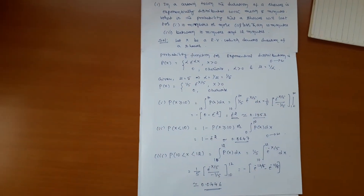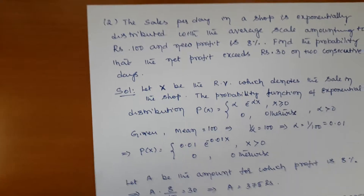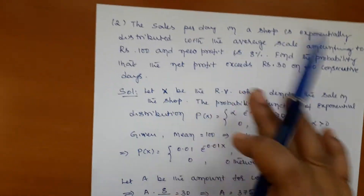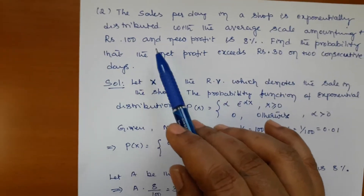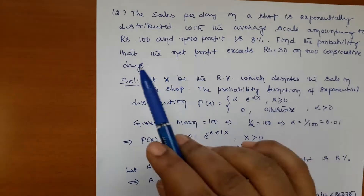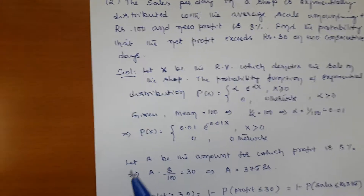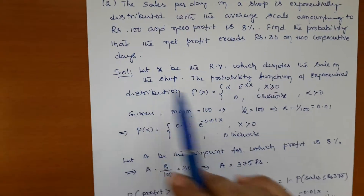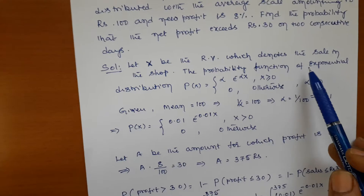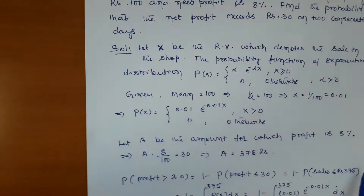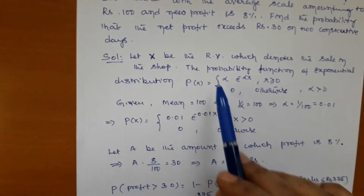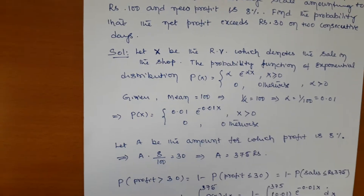Moving to the next problem — an application problem. Sales per day in a shop are exponentially distributed with an average sale amounting to rupees 100. The net profit is 8 percent. We need to find the probability that the net profit exceeds rupees 30 on two consecutive days. Let X be the random variable denoting the sales in the shop.